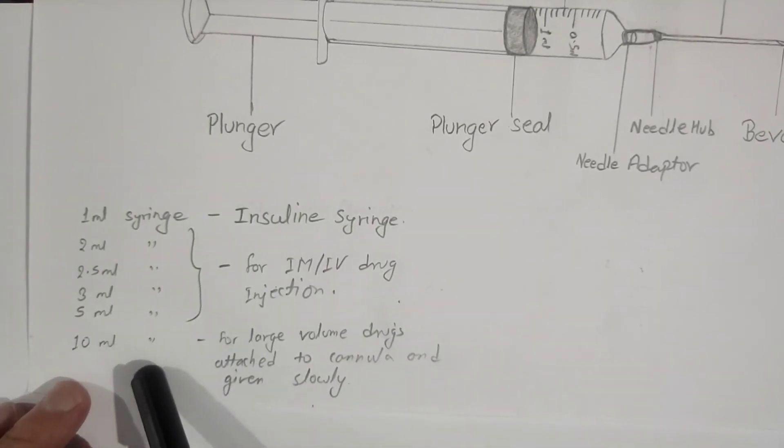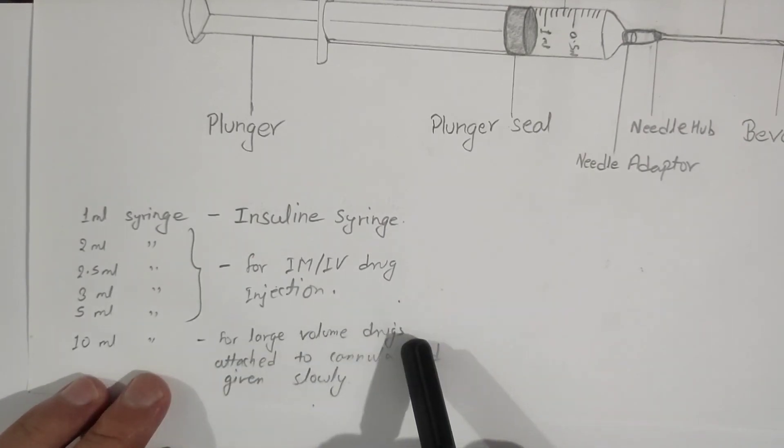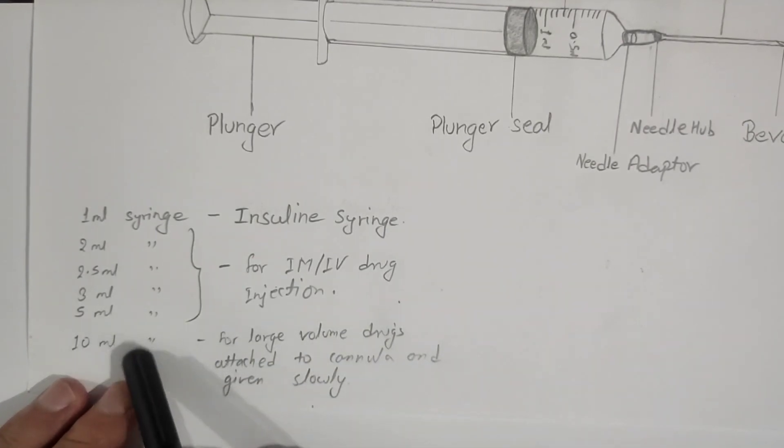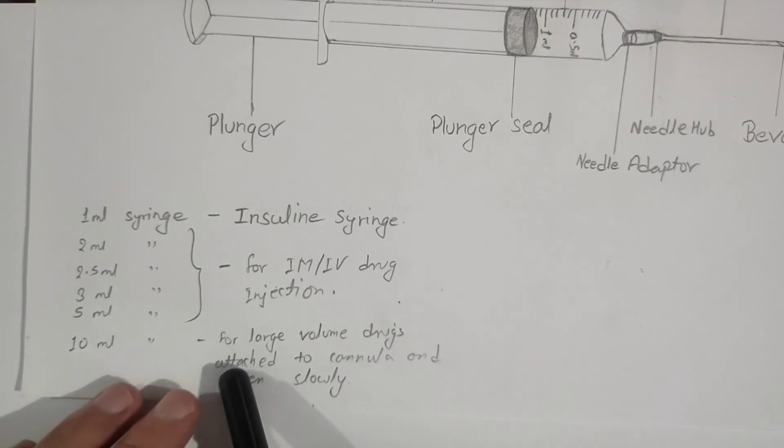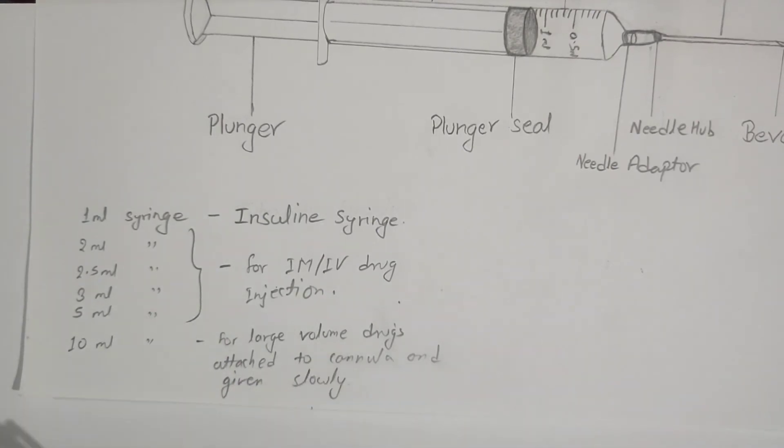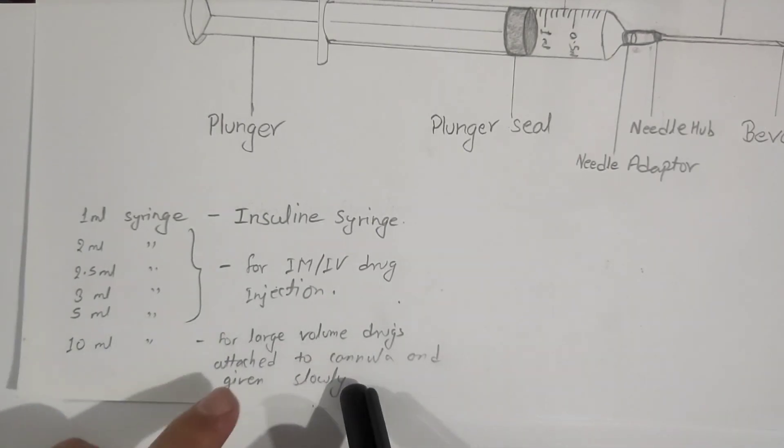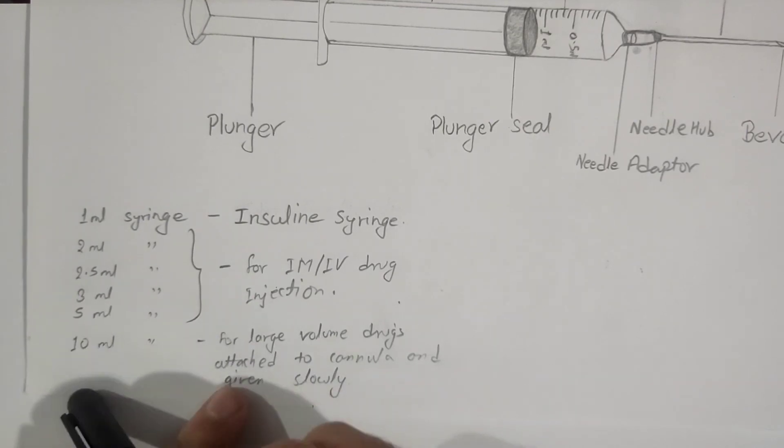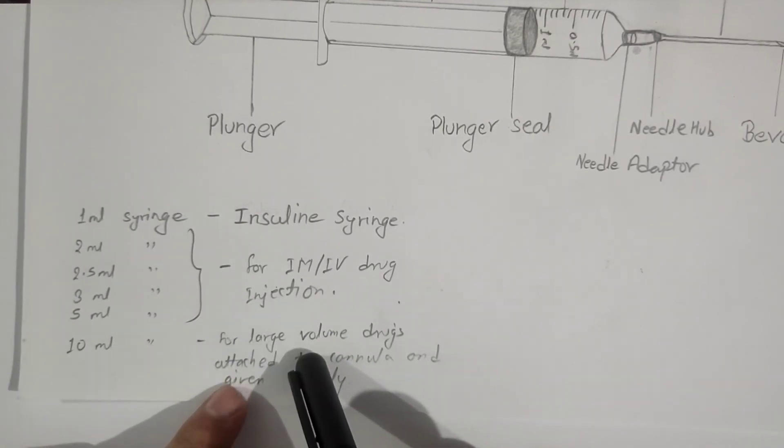Another one is the 10ml syringe. The 10ml syringe is mainly used for large volume drugs and is mainly attached with a cannula, and the drug is given IV slowly infused. The 10ml syringe is also used to flush the catheter.